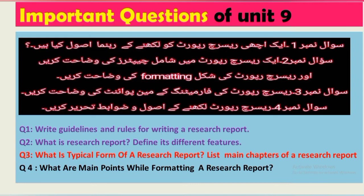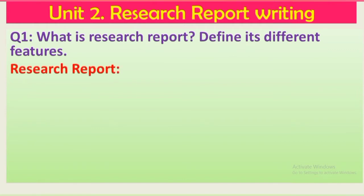Important questions of Unit Number 9: What are the guidelines for writing a good research report? Explain the chapters included in a research report and describe the format of a research report. Explain the main points of the research report format, and what are the rules and regulations for writing a research report? In English: guidelines and rules for writing research reports, define its different features, what is the typical form of research reports, list main chapters, and what are the main points while formatting research reports.